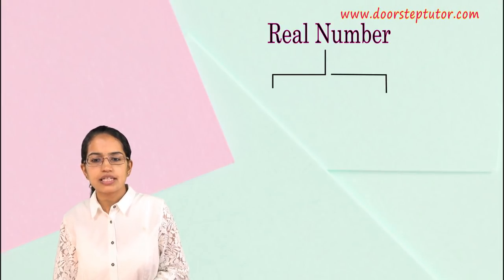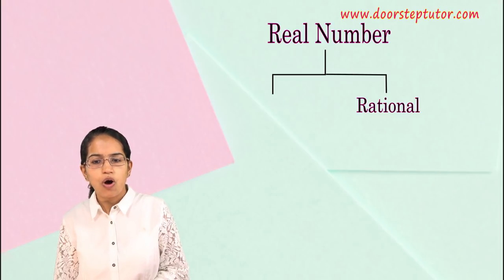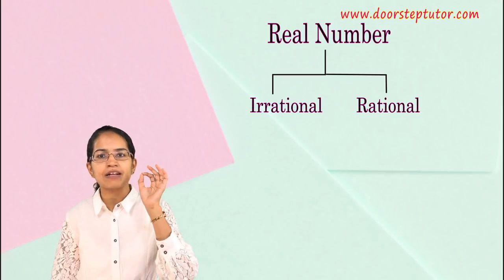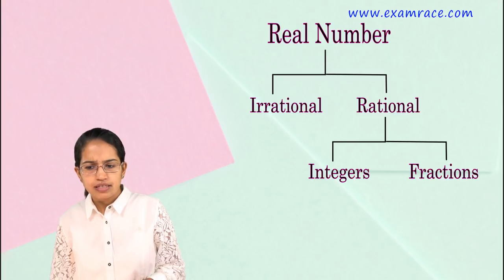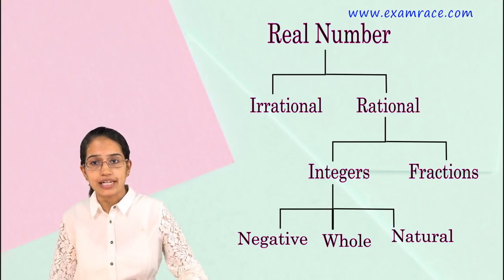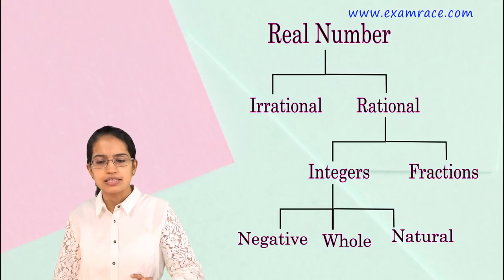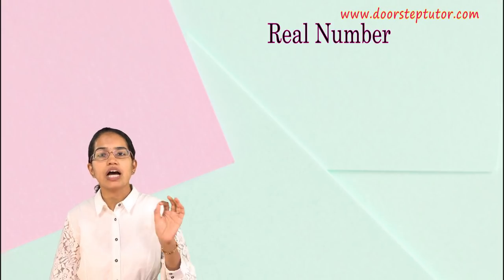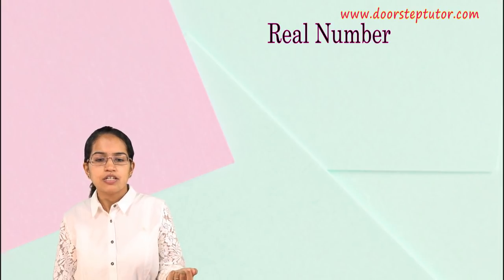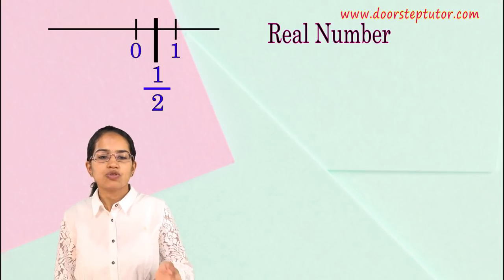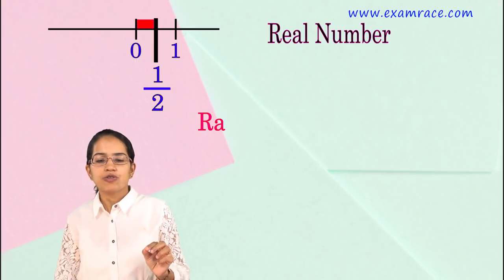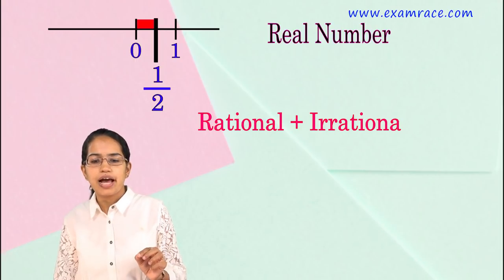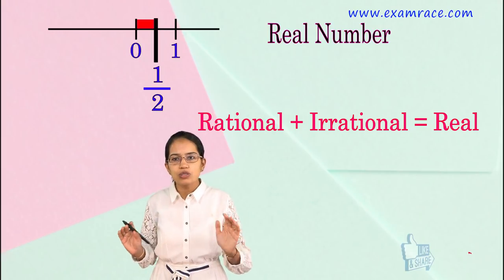To summarize: real numbers can be classified as rational or irrational numbers. Irrational numbers are non-repeating and non-terminating. Rational numbers can be further classified into integers and fractions, where integers include whole numbers, natural numbers, and negative numbers. Real numbers are the only continuous numbers — if you take only rational numbers like 0, one-half, and 1, there are gaps, making them discontinuous. These gaps are filled by irrational numbers, so rational plus irrational numbers form the complete real number system.